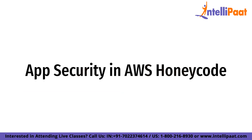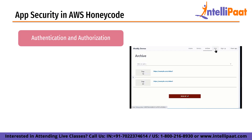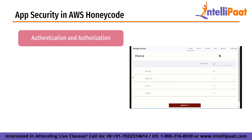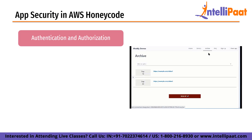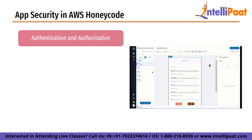Now let's talk about app security in Honeycode. App security is a critical aspect of building an application in Honeycode, ensuring that the app is protected from unauthorized access, data breaches, and other security threats. It is important to consider security throughout the entire application development lifecycle. The first step is to implement authentication and authorization mechanisms. Authentication verifies the identity of the user, while authorization determines what actions the user can perform. In Honeycode, these can be implemented using a built-in authentication provider or by integrating with an external provider.